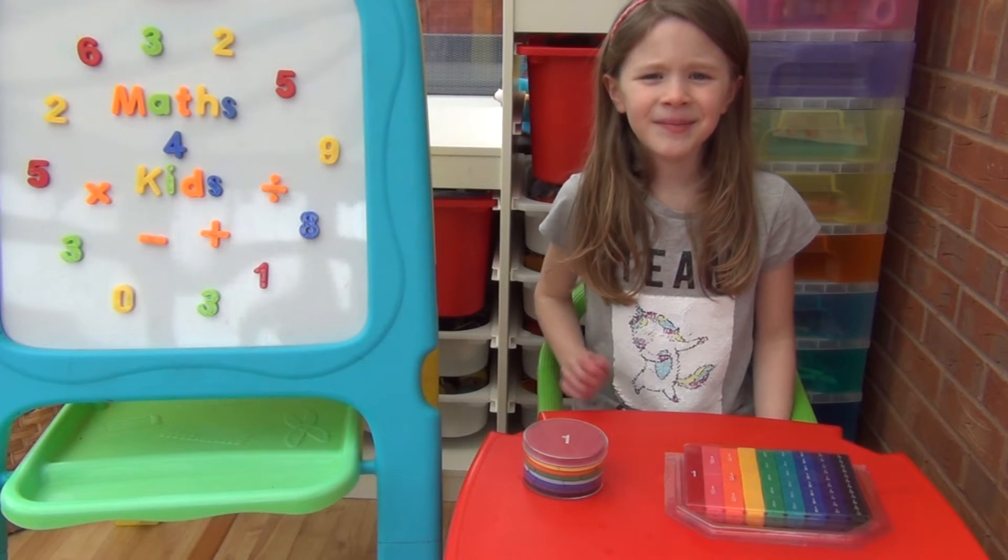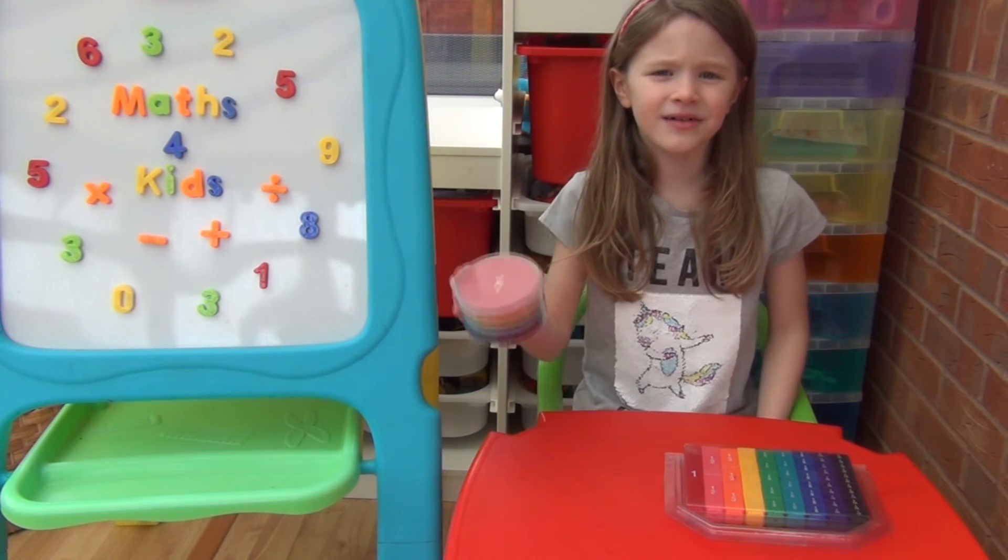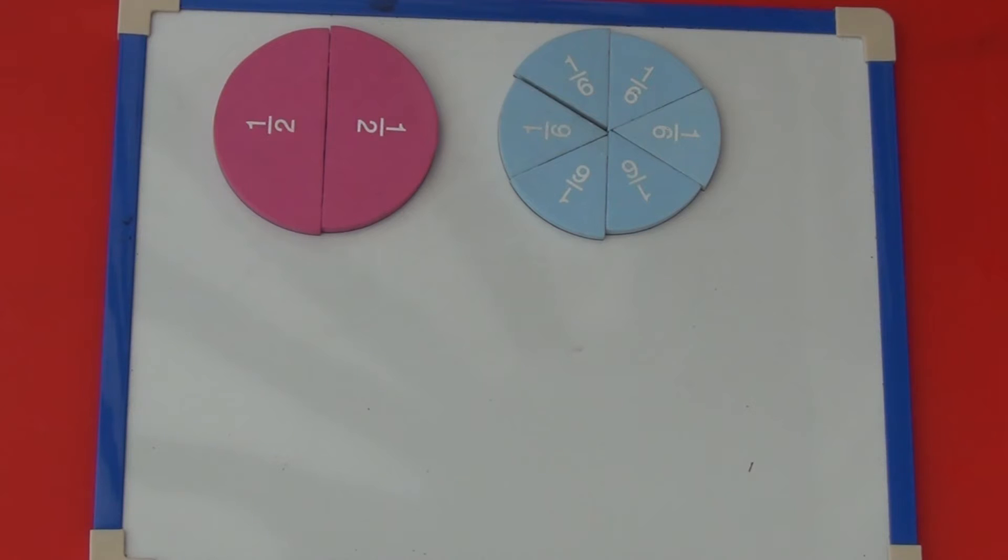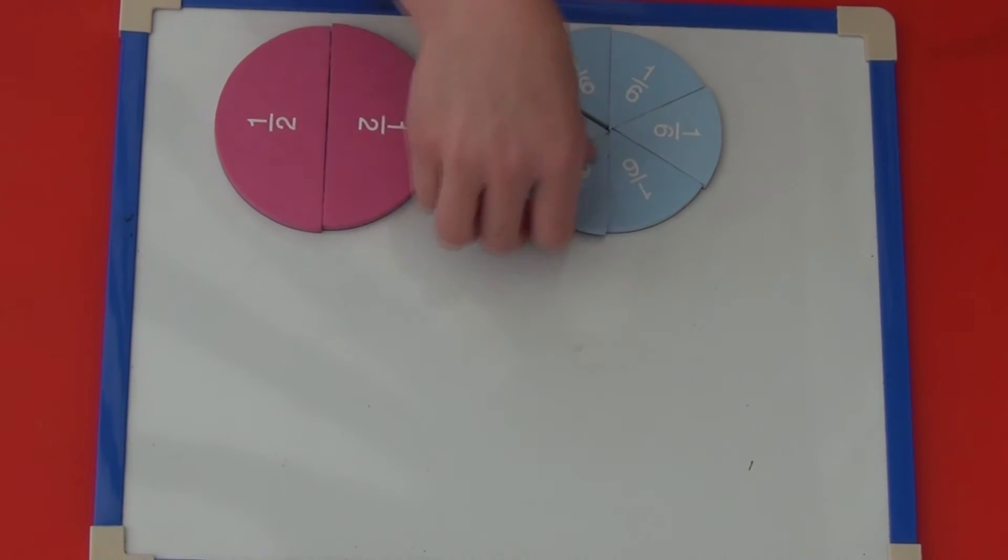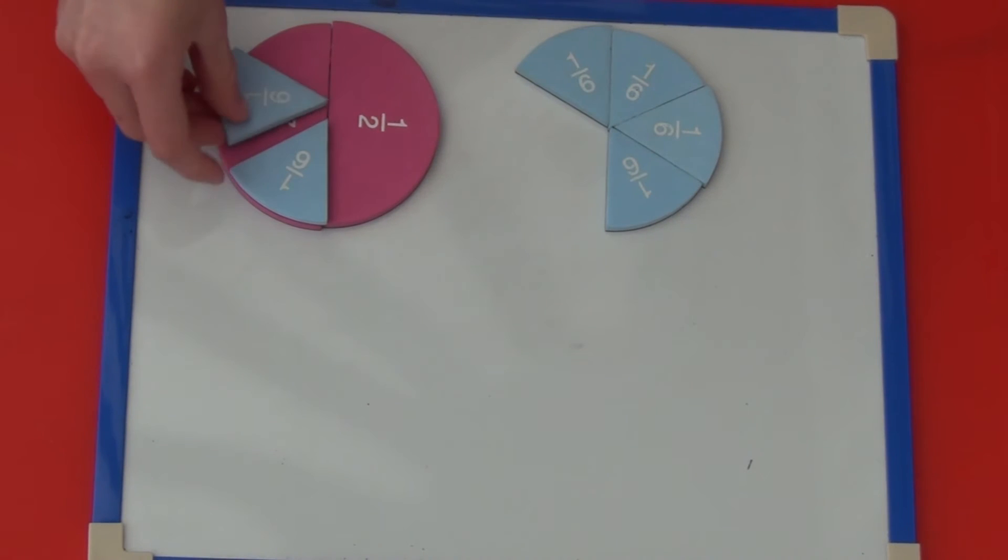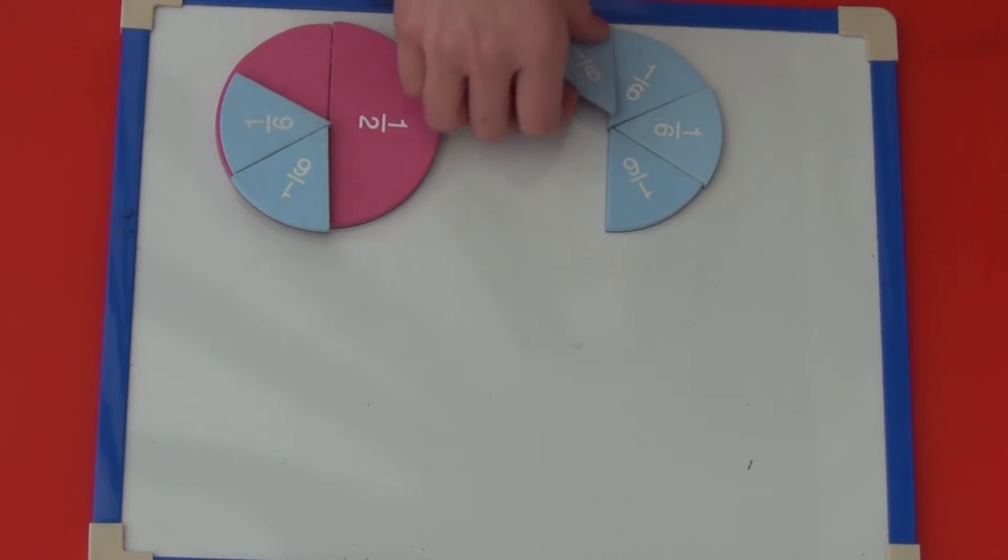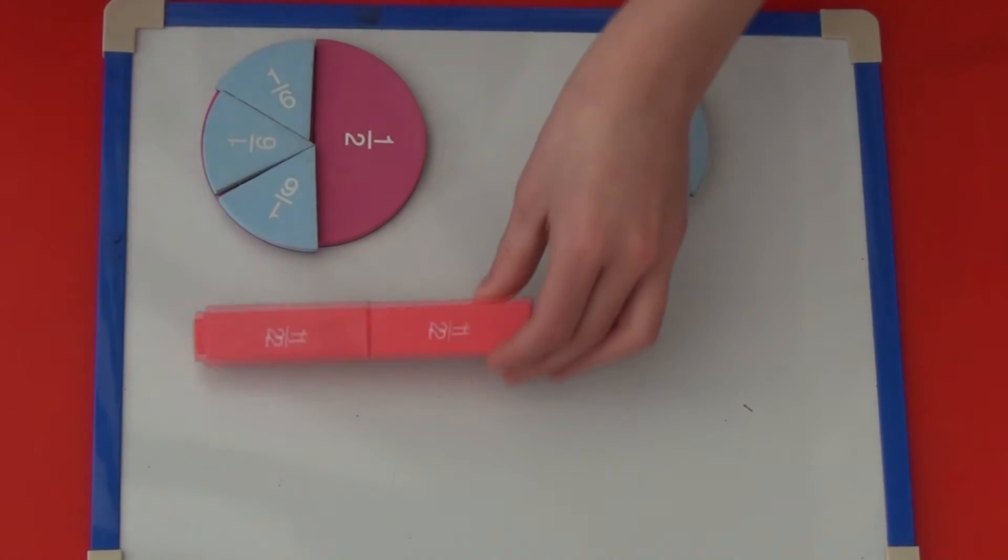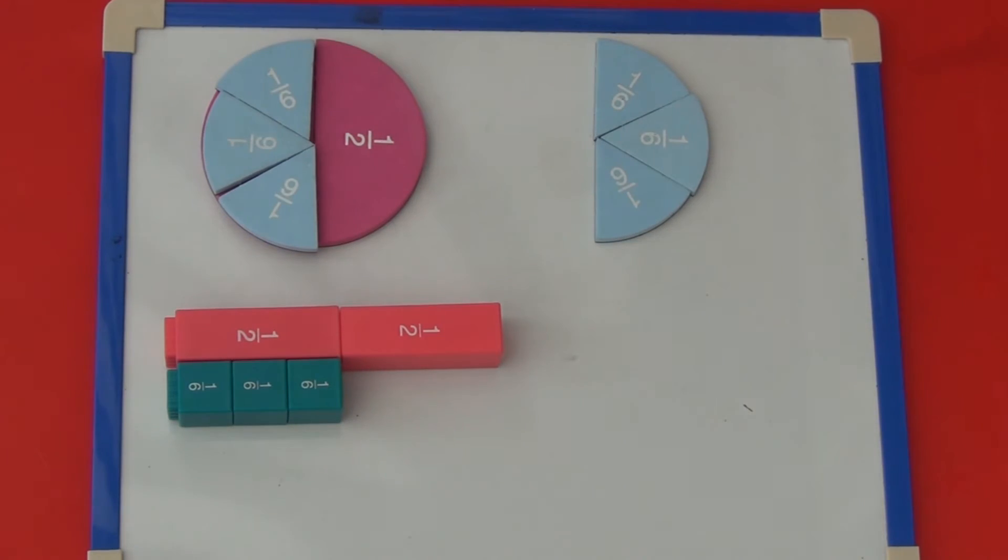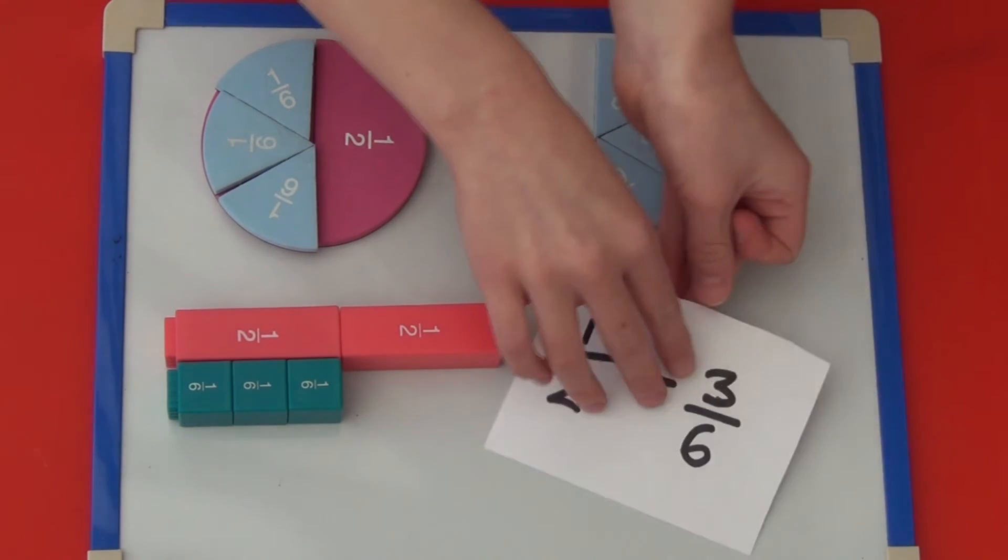I can show you a few more using fraction circles and fraction cubes. For my first one we can see that one half is equivalent to three-sixths. I can also show this with cubes. So one half equals three-sixths.